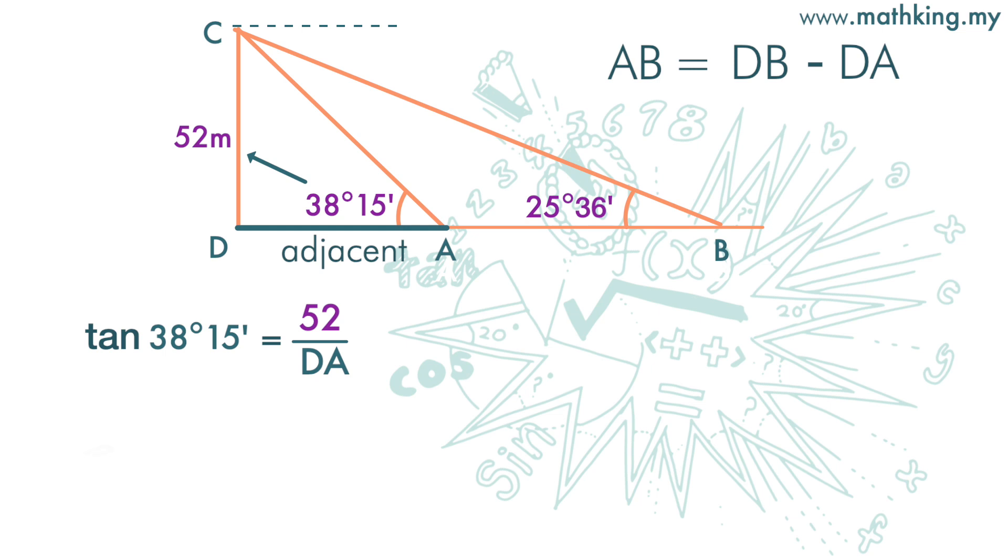So DA is 52 over tangent 38 degrees 15 minutes. The answer is 65.96 meters, rounding off to two decimal places.